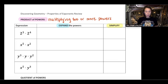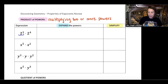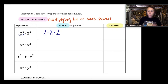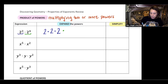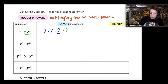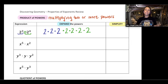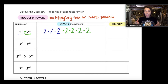In the first example, 2 to the power of 3 is our first power. Expanding that means 2 times 2 times 2 — in other words, 2 multiplied by itself 3 times. We continue that multiplication by multiplying by 2 to the power of 4, expanding that as 2 times 2 times 2 times 2.